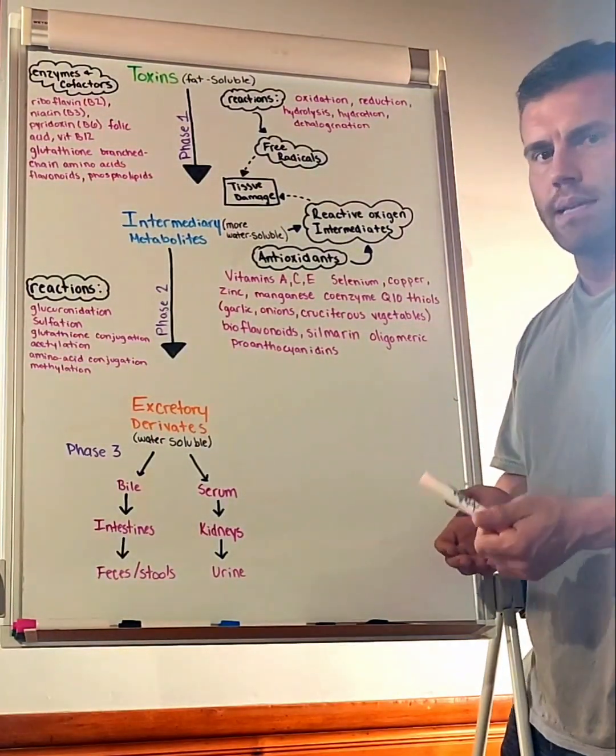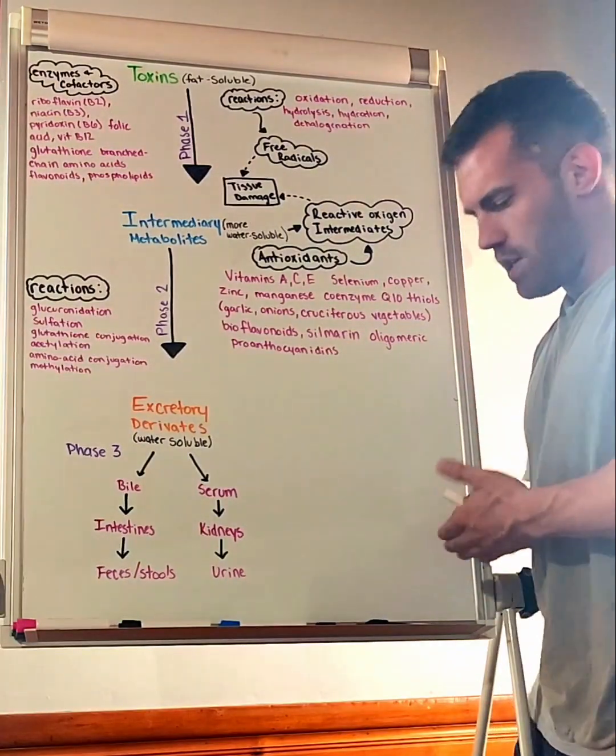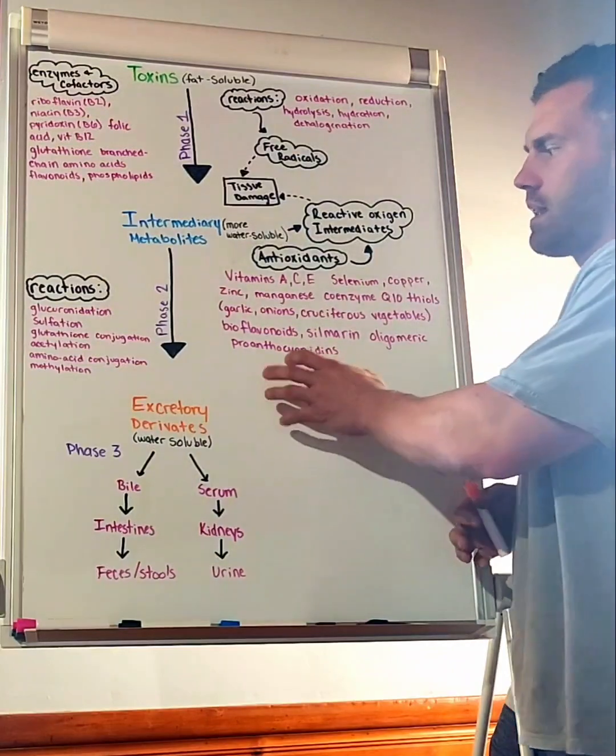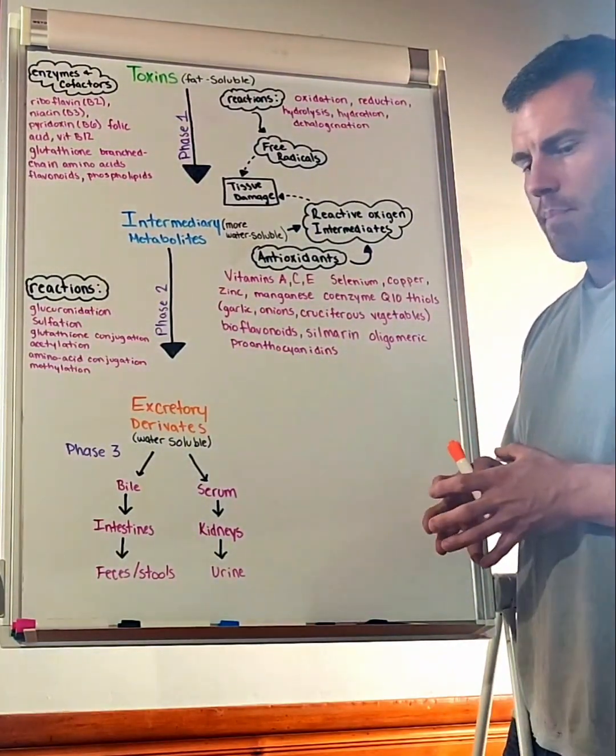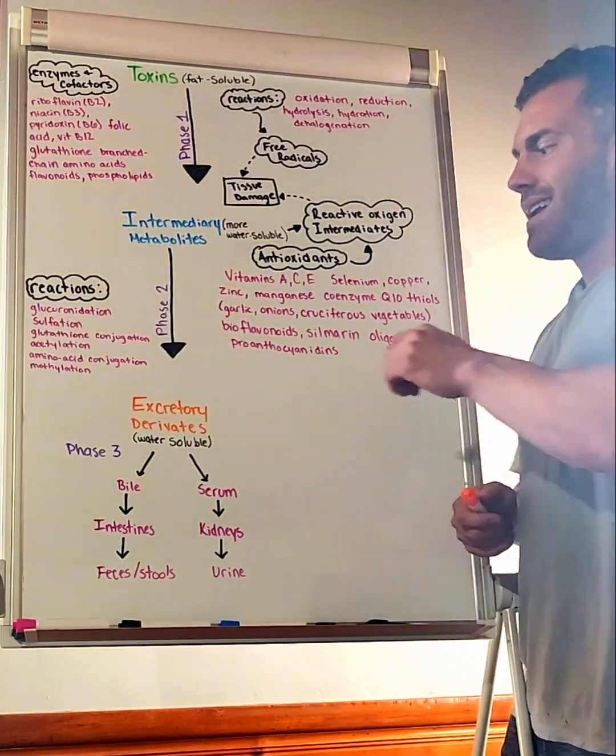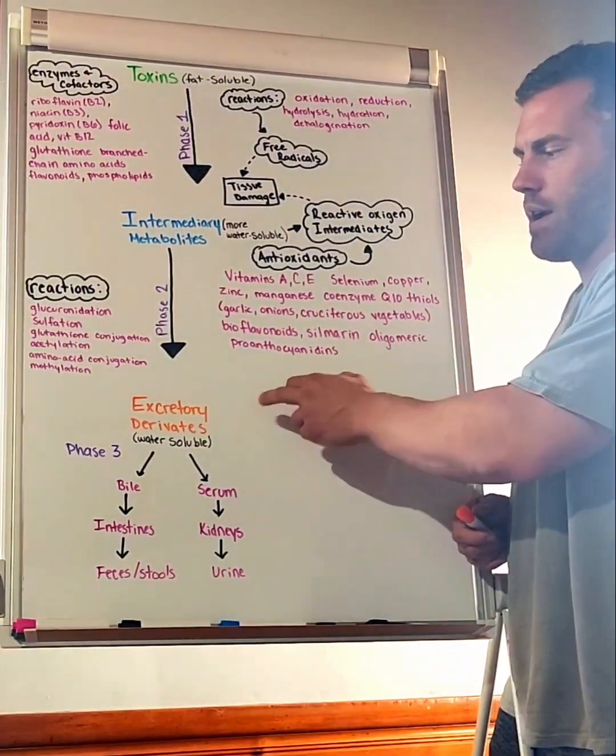Let's assume that we get through phase one, we get through phase two, we have the right nutrients, and we've taken the compounds in phase two and added other compounds or carriers to them to move them where we want them to go. Now we can get to the excretory phase or excretory derivatives.